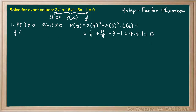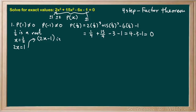So 1/2 is a root, and the factor associated with 1/2 we can get by rearranging this equation. I like to multiply both sides by 2, which gives us 2x equals 1, and then we subtract 1 from both sides to leave us with 2x minus 1 as our factor. This way we don't have any fractions in our factor. So 2x minus 1 is the factor we're looking for.